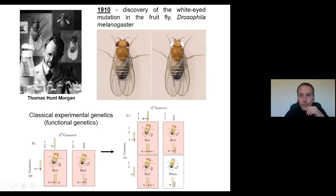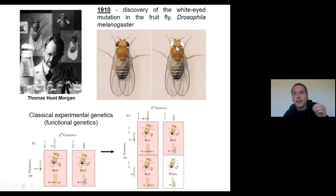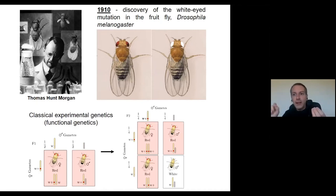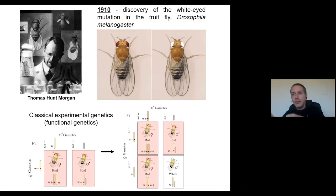That happened with the appearance of a very beautiful fly that had white eyes instead of red eyes, as a normal wild-type fruit fly should have. The appearance of this white fly allowed him to associate this information — the color of the eyes — to a fragment within the nucleus that was the X chromosome of the fruit fly.